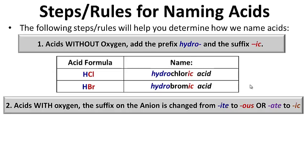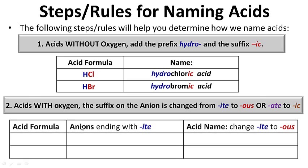Rule number two: for acids with oxygen, the suffix on the anion is changed from ite to us, or ate to ic. So if the anion ends in ite, we change ite to us; if it ends in ate, we change ate to ic. For example, H2SO3 contains the anion sulfite, so ite becomes us — giving us sulfurous acid. H3PO3 contains phosphite; if we add three hydrogens to balance that negative three charge, we get phosphorous acid.